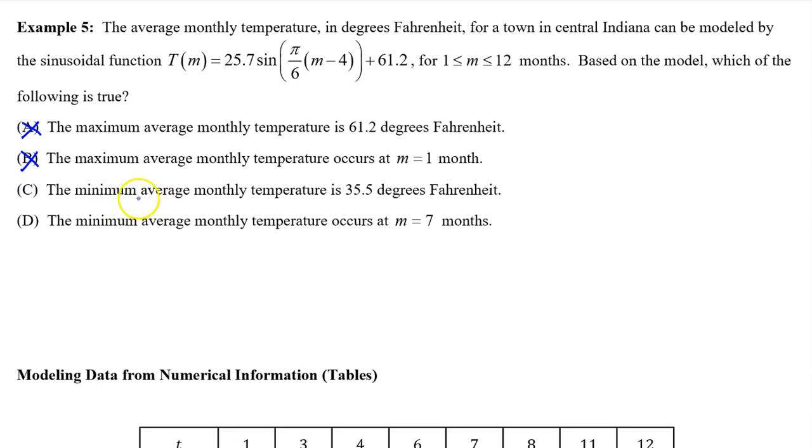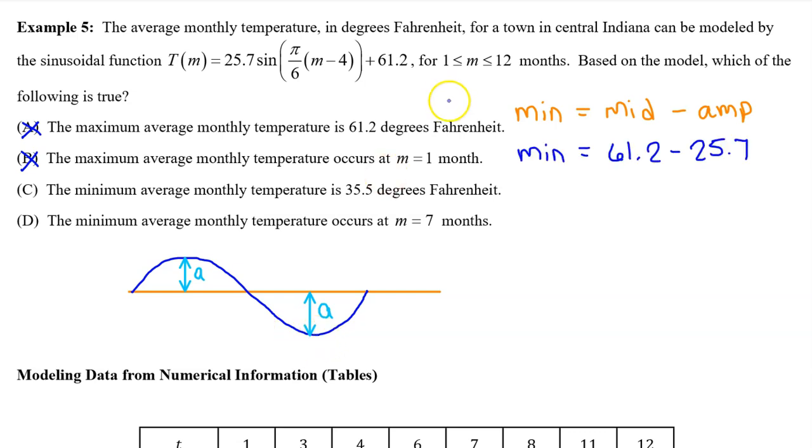Option C says the minimum average monthly temperature is 35.5 degrees Fahrenheit. On a sinusoidal function, if you start with the middle value and you subtract the amplitude, that should give you the minimum value. In this case, the middle value is the d value, which is 61.2, and the amplitude is the a value, which is 25.7. 61.2 minus 25.7 is 35.5. So the answer is C.